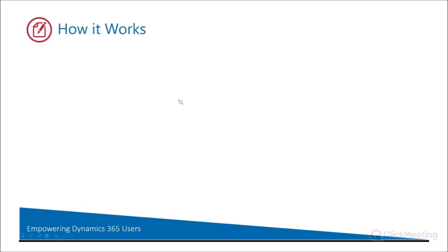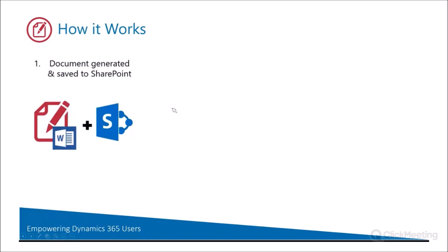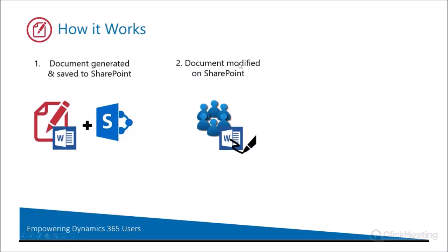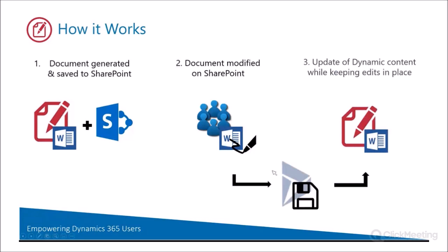Let's talk a little bit about how this actually works. The first step is that we have the documents generated and then saved to SharePoint — that includes the edits that you do to the document. Then you can also modify your document on SharePoint. Users that are not using Dynamics or Documents Core Pack can go onto SharePoint and make changes to these editable sections. And then on the next time you go and create this document, we pull these changes back, save them into Dynamics, and basically update the template in real time with these edits along with the dynamic fields. It's a really simple process.